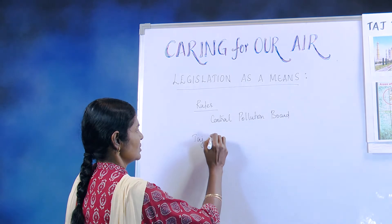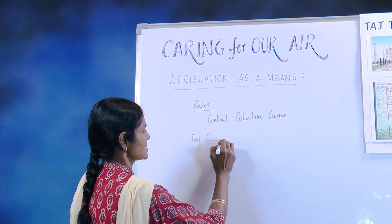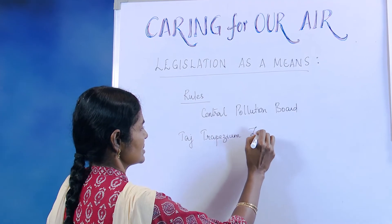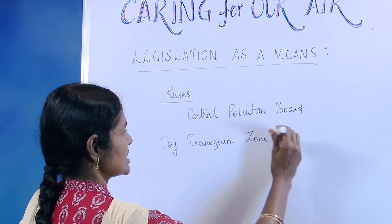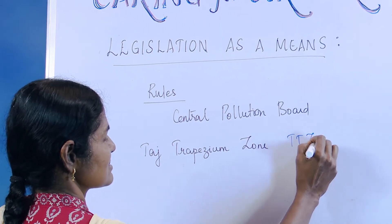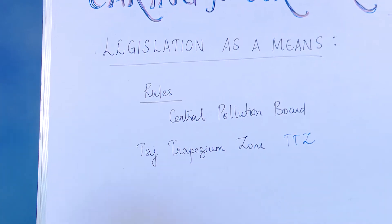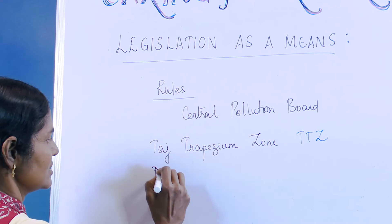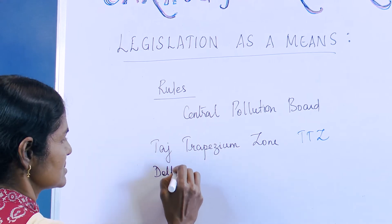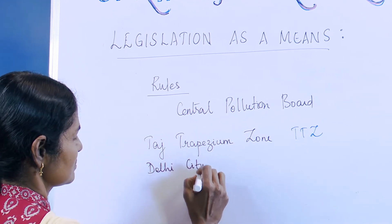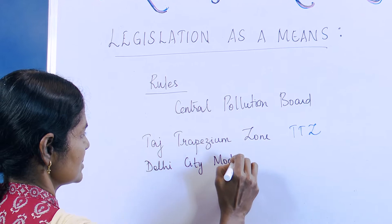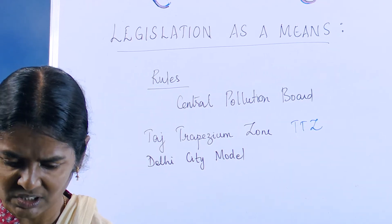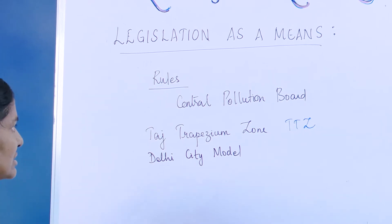According to these norms, there are two things we need to learn about today. One is the Taj Trapezium Zone, in short called TTZ, and the second one is the Delhi City Model.